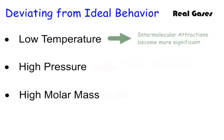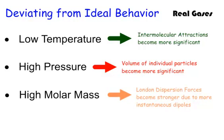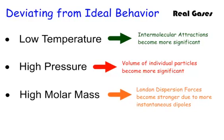What does temperature do? It makes the intermolecular attractions more significant. The molecules slow down and they attract each other more. The London dispersion forces become that much more significant. What high pressure does is when you have really high pressure, the volume of the individual particles becomes more significant. And when we have a high molar mass, the London dispersion forces become stronger because they're due to more instantaneous dipoles. There's more polarizability of those molecules.